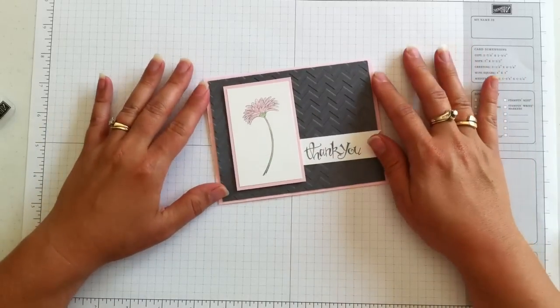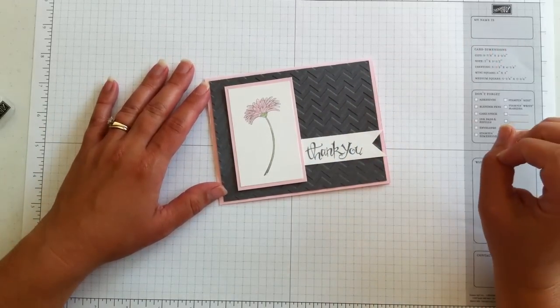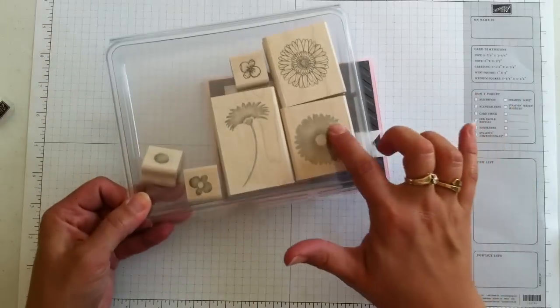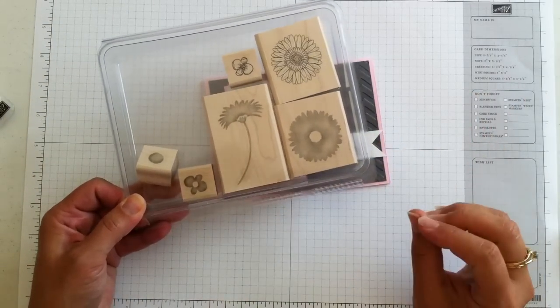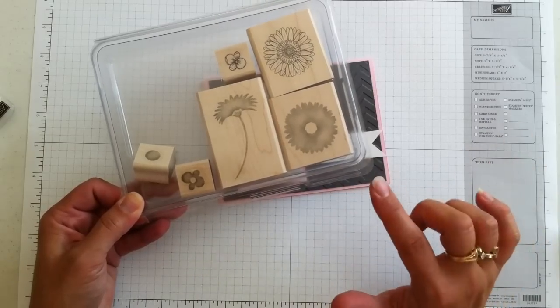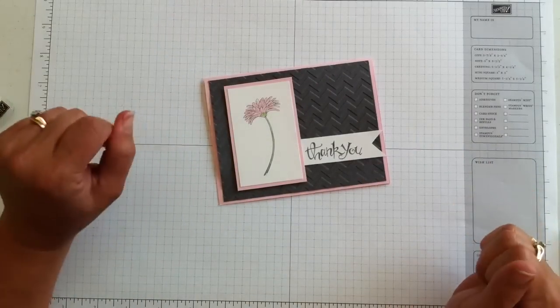So it's a quick and easy card. This Reason to Smile stamp set is very versatile. You can do some different coloring like I did. Or with the more solid images here, that makes for great water coloring options too. Be sure to check out my Facebook page or my blog. I've got four other cards made with this stamp set that I'm actually doing for a class this coming week.